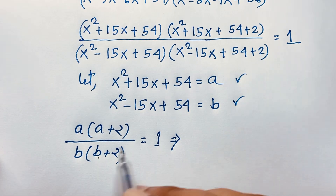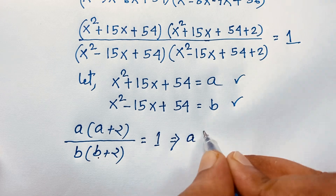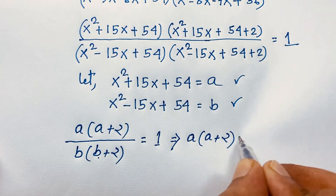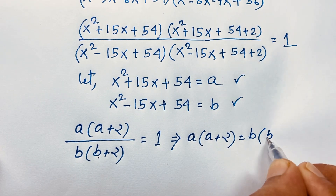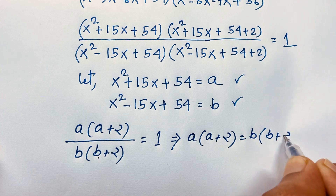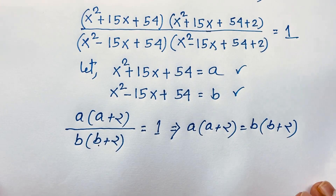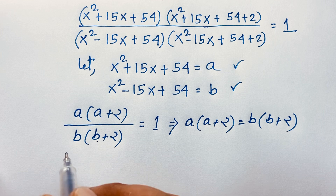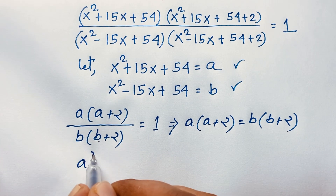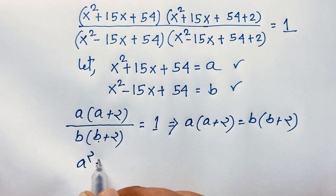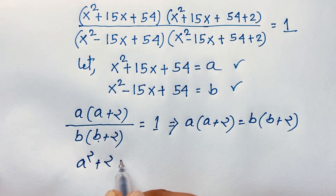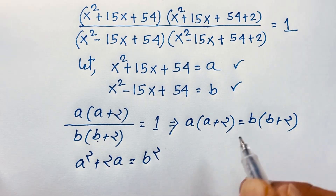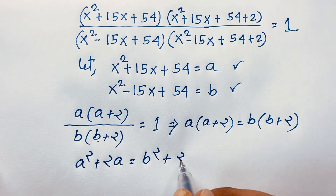Since the product equals 1, we get a(a+2) = b(b+2). Expanding: a² + 2a = b² + 2b.